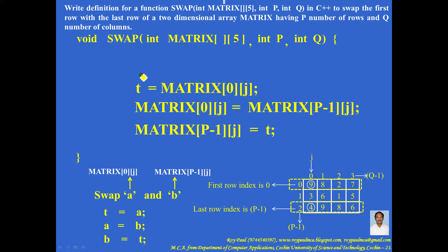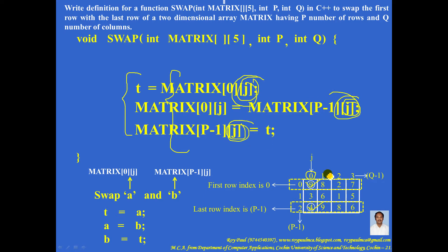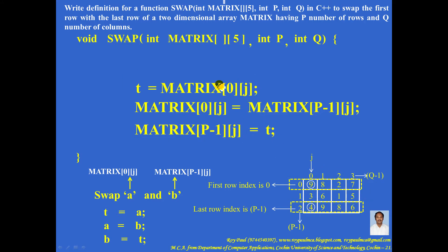In this code, if I substitute j with 0, these two elements will be swapped. If I substitute j with 1, these two elements will be swapped. If I substitute j with 2, these two elements will be swapped. Finally, if I substitute j with q minus 1, these two elements will be swapped. So you can see that as j varies from 0 to q-1, all these elements will be swapped with these elements.